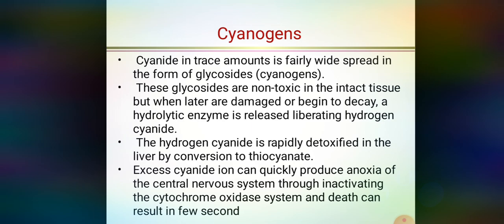The liberated hydrogen cyanide is rapidly detoxified in the liver by conversion to thiocyanate. The body can minimize this. However, excess cyanide ions can quickly produce anoxia of the central nervous system through inactivating the cytochrome oxidase system, and death can result in a few seconds.